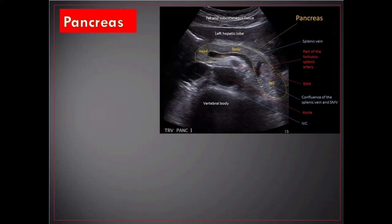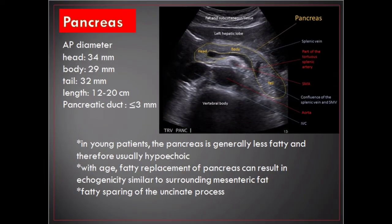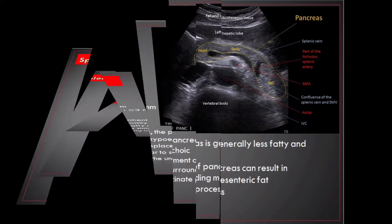Pancreas. Pancreatic ultrasound can be used to assess for pancreatic malignancy, pancreatitis and its complications, as well as other pancreatic pathology. The patient should fast to reduce interference from overlying bowel gas. In younger patients the pancreas is generally less fatty and therefore hypoechoic; with age, fatty replacement can result in echogenicity similar to surrounding mesenteric fat. Measurements — posterior diameter: head 34 millimeters, body 29 millimeters, tail 32 millimeters; length between 12 and 20 centimeters; pancreatic duct less than or equal to 3 millimeters.